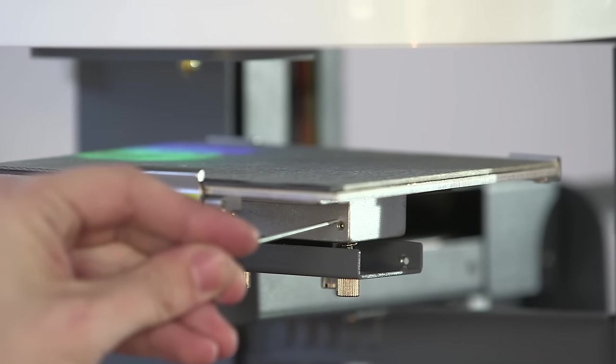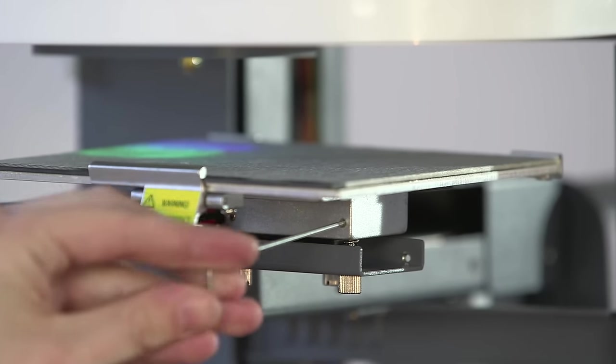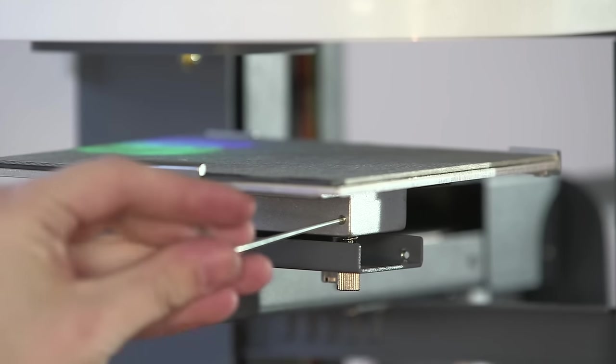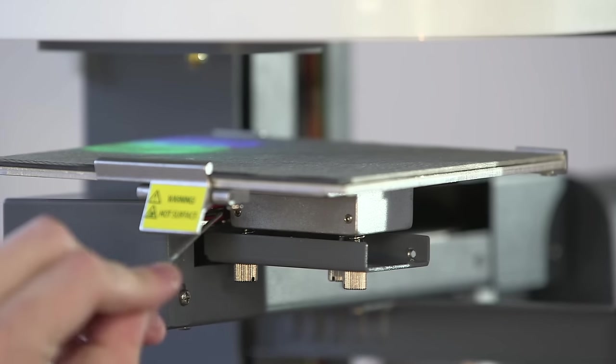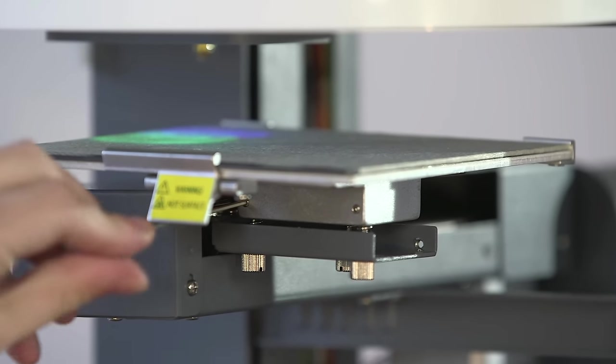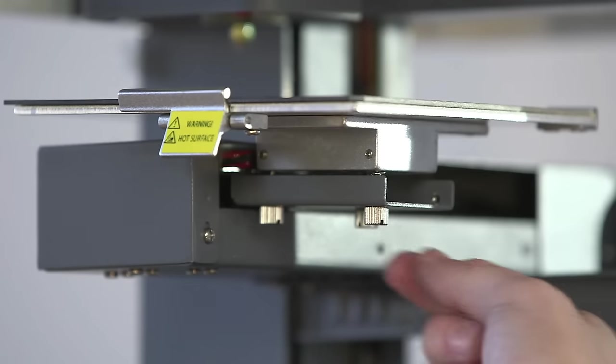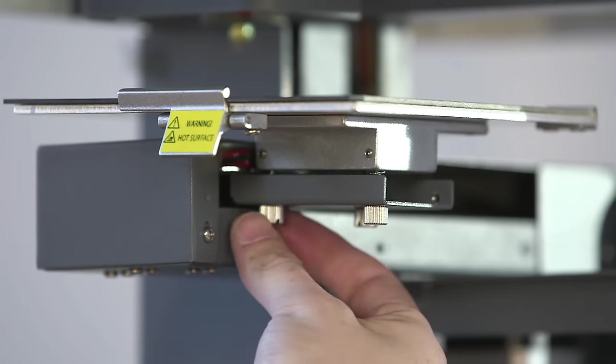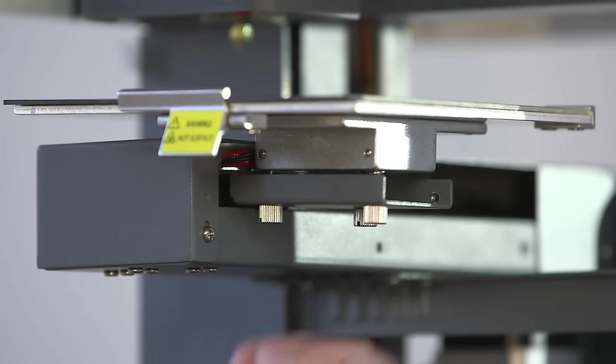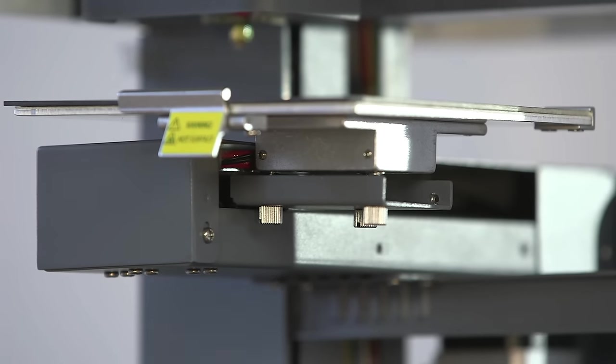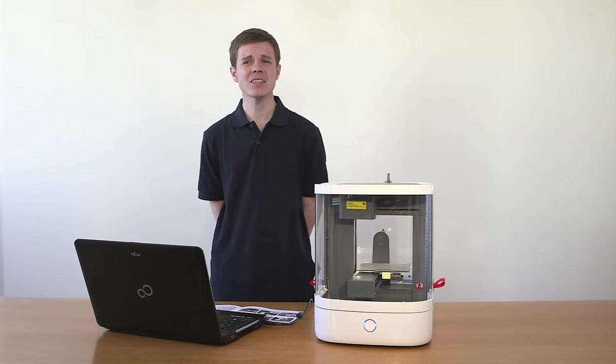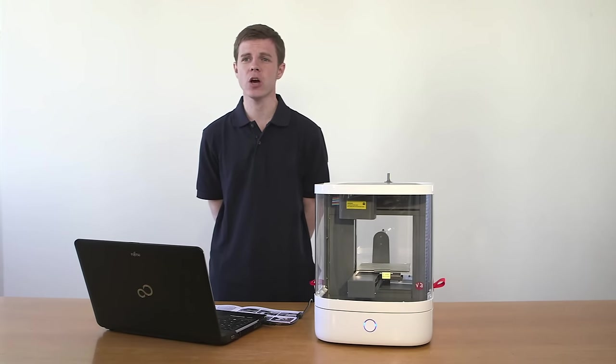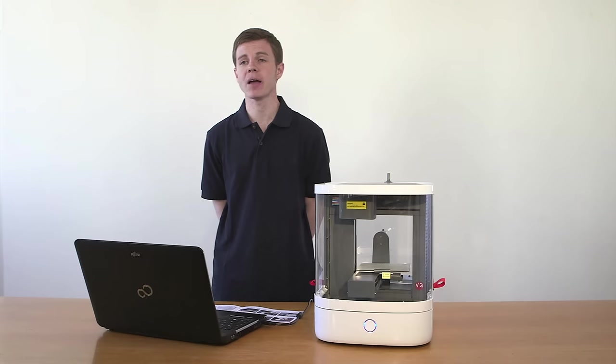With the small allen key, loosen the three grub screws in the plate support base. Do not remove them fully as they are very small and easy to lose. This will allow you to adjust the vertical bolts that control the tilt of the plate. Using a screwdriver or your fingers, turn the vertical adjustment bolts until you achieve a consistent gap between plate and nozzle at all five squares. This may take a while. You should make only small adjustments to each bolt, about a quarter turn at a time, as the adjustment mechanism is sensitive.